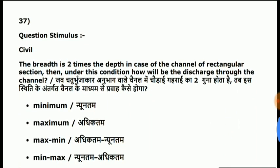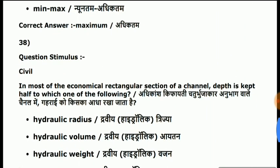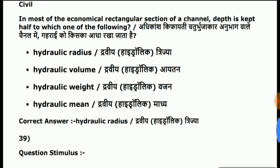Question 37: the width is two times the depth in case of a rectangular section channel — under this condition, how will the discharge through the channel be? Answer is maximum. Question 38: in the most economical rectangular section of a channel, depth is kept half to which of the following? Answer is hydraulic radius.